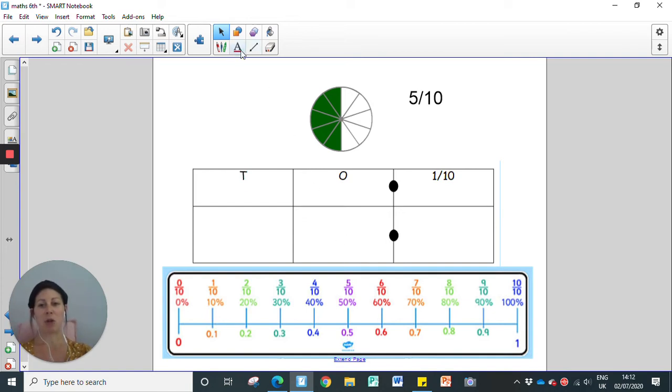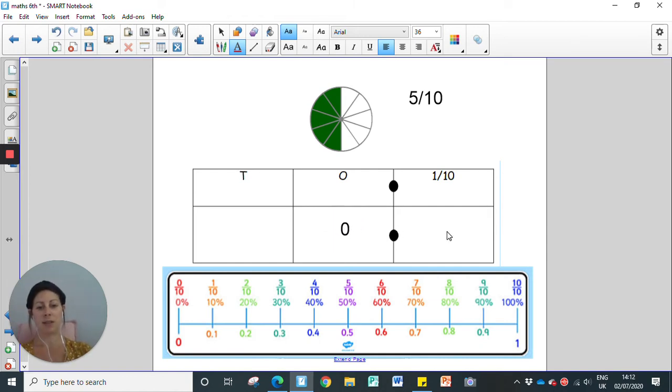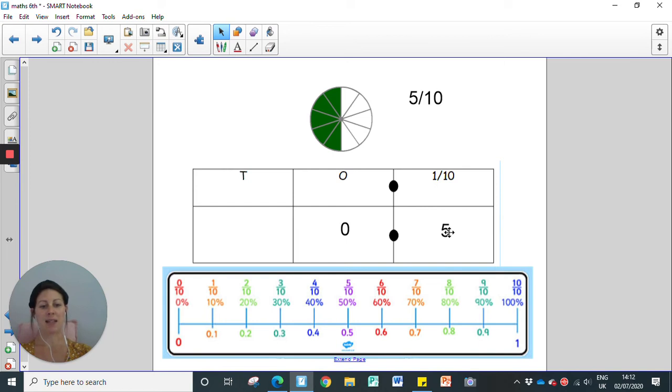So I can record that onto my place value chart here. I can put that there's zero ones but there is five tenths. Okay, so we would say that five tenths as a decimal is 0.5.